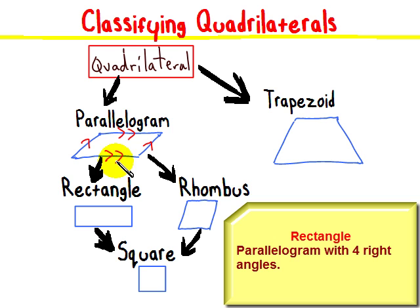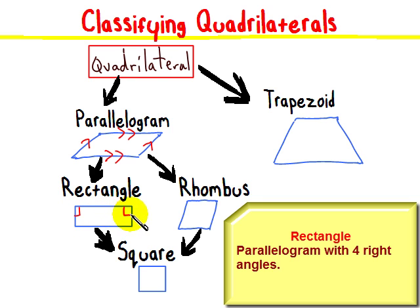And then there are different kinds of parallelograms. There's the rectangle, which is a parallelogram, but it has four 90-degree angles, or right angles.